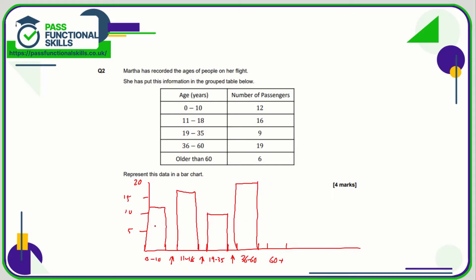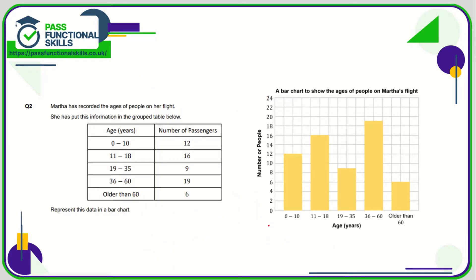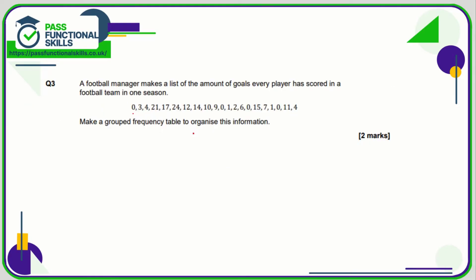The sixty-plus category is six, and we're done. Comparing to the mark scheme: the gaps between all bars are consistent, and they've also added a gap before the first bar. The width of the bars is consistent throughout — two squares wide each. Zero to ten goes up to twelve, eleven to eighteen goes up to sixteen, nineteen to thirty-five is nine, thirty-six to sixty is nineteen, and sixty-plus is six. That is a perfect bar graph for that data.